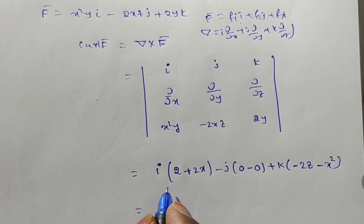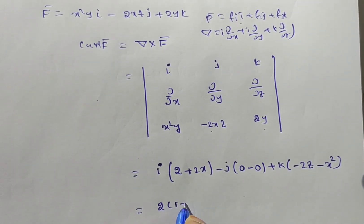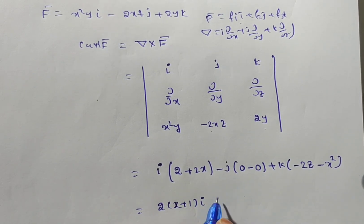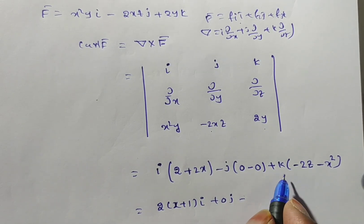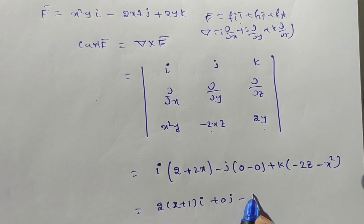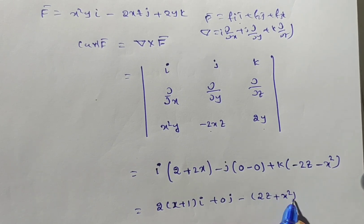Now if you simplify this, you can take 2 common, that is 2(x + 1) times i. And this term is zero. Next you can take minus is common from this, that is why I have written minus. Now the remaining term is 2z plus x square times k.